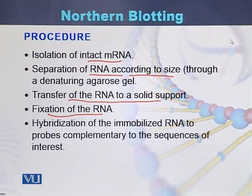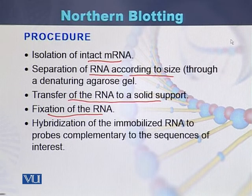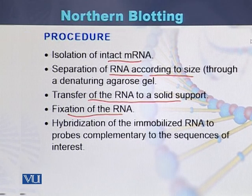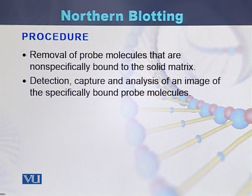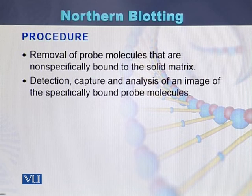The procedure in Northern and Southern blotting is almost similar, but here we are working with messenger RNA, whereas in Southern blotting we work with DNA. After hybridization, non-specifically bound probe molecules are removed from the solid matrix, followed by detection, capture, and analysis of an image of specifically bound probe molecules.